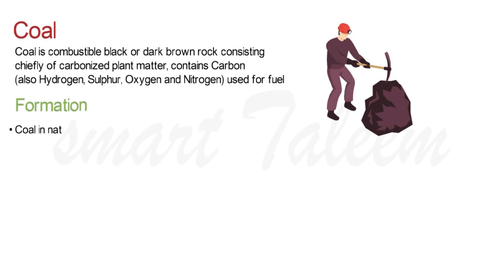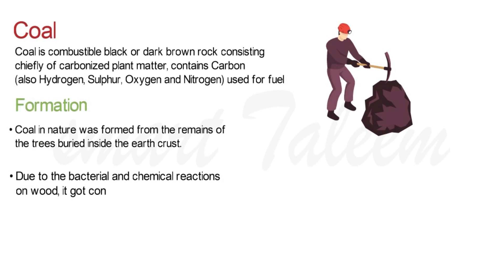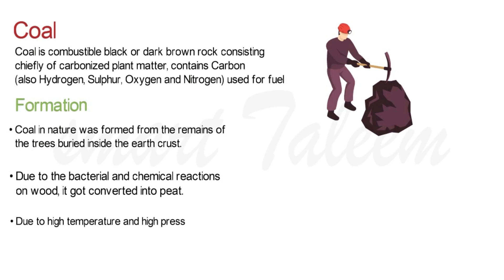Coal in nature was formed from the remains of trees buried inside the earth's crust. Due to bacterial and chemical reactions on the wood, it got converted into peat. The dead plants that go underground undergo bacterial and chemical action, and due to high pressure applied as they go deeper, they are finally converted into coal.